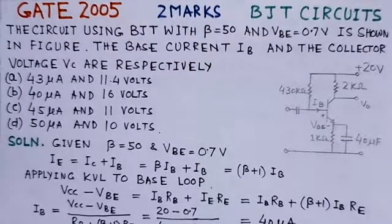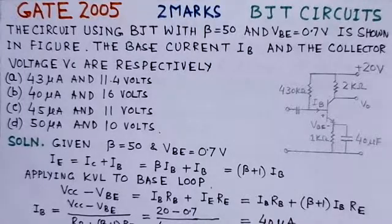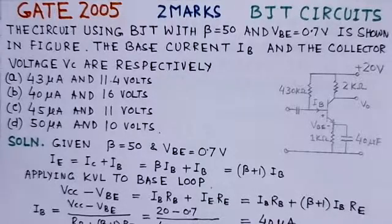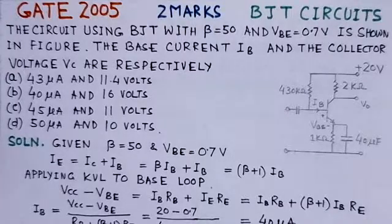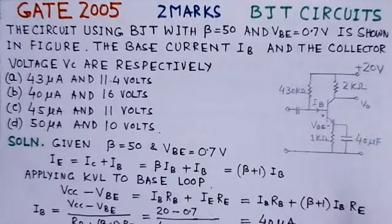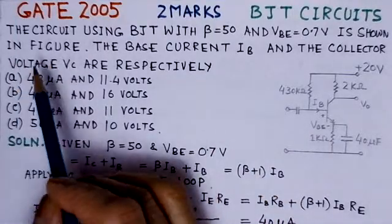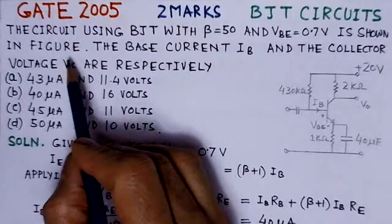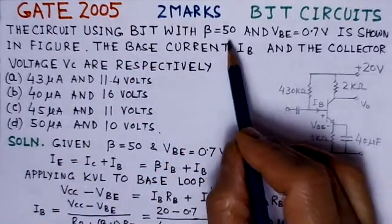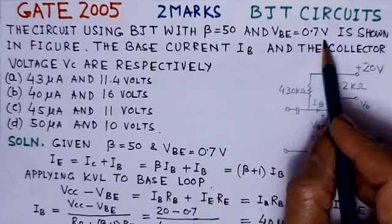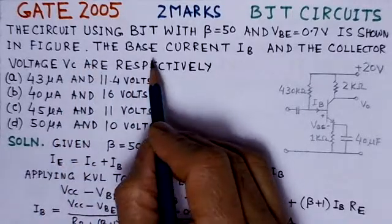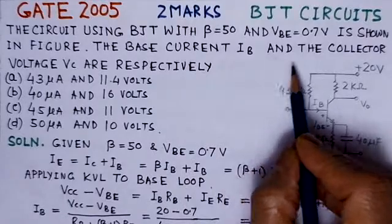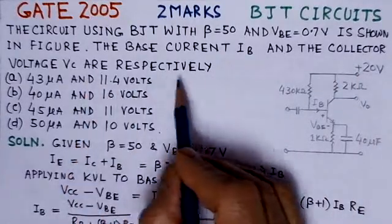The present problem is from GATE 2005, worth two marks, and is on BJT circuits. The circuit uses a BJT with beta equal to 50 and VBE of 0.7 volts as shown in the figure. The base current IB and the collector voltage VC are respectively to be found.